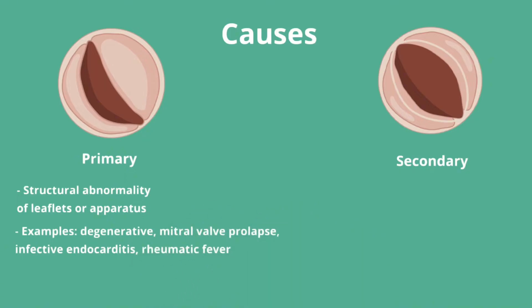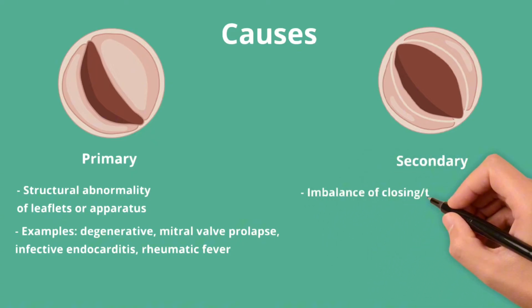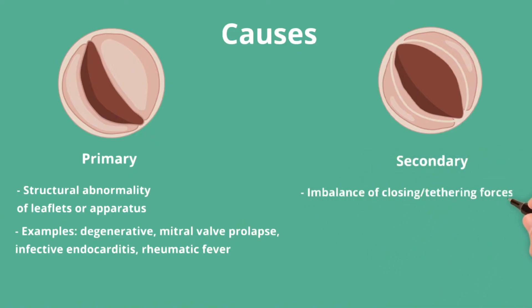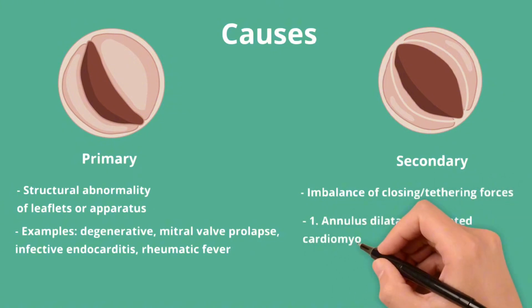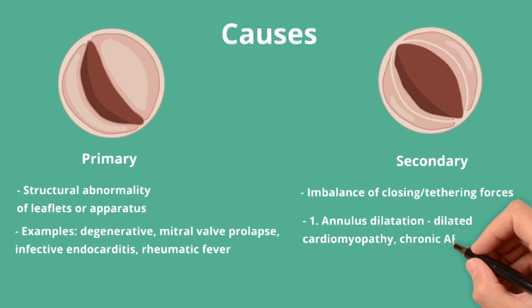In secondary mitral regurgitation, on the other hand, there are no direct structural abnormalities with the valve or its apparatus. It is instead caused by an imbalance between the closing and tethering forces due to changes in the left ventricle or left atrial size or function. The first major cause of this is abnormal dilatation of the mitral valve annulus, which prevents adequate coaptation of the leaflets due to physical separation. This can occur either due to left ventricular dilatation, as seen in dilated cardiomyopathy, or left atrial dilatation, for example as seen in chronic atrial fibrillation.